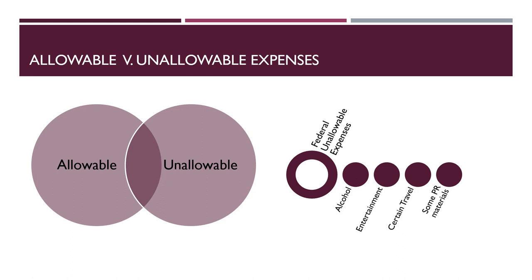Private grant programs through foundations and other funds will also have unique budget guidelines that must be followed to maintain compliance. Program directors and grant managers should understand the allowable and unallowable expenses under each grant program they are working with, and have this understanding at the time of budget development in the proposal stage. This helps to minimize budget questions if a grant award is made. However, it is also good to maintain and revisit this list as the budget and the project are implemented, to limit budget issues along the way.